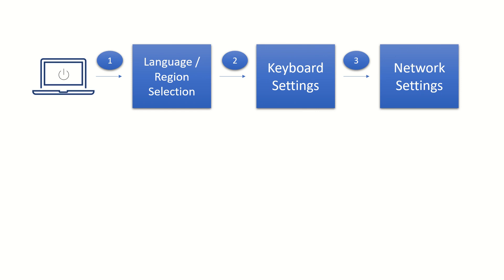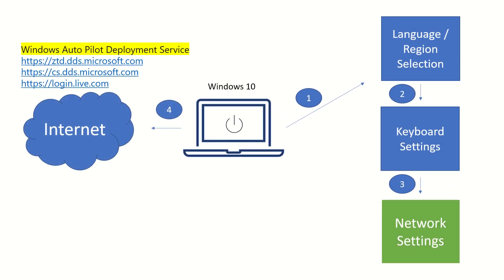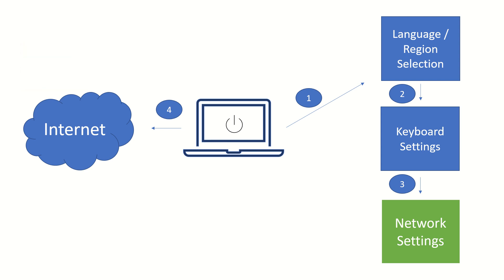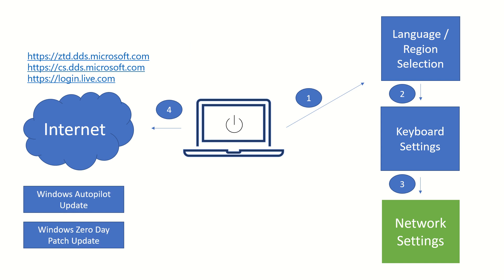Once the machine has appropriate internet connectivity, a feature in Windows 10 allows it to contact the Windows Autopilot deployment service endpoints. When this communication happens between the machine and these endpoints, certain checks occur: first, whether this machine is scoped for any Windows Autopilot update or profile; and second, whether there is a Windows Zero Day update. The Autopilot update is required for the Autopilot service itself to work appropriately.